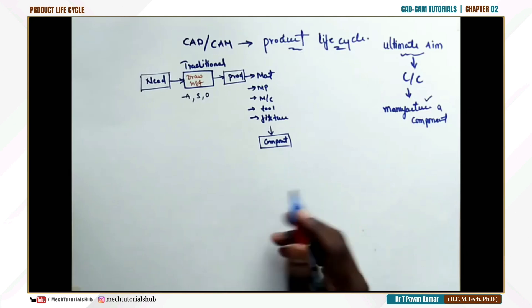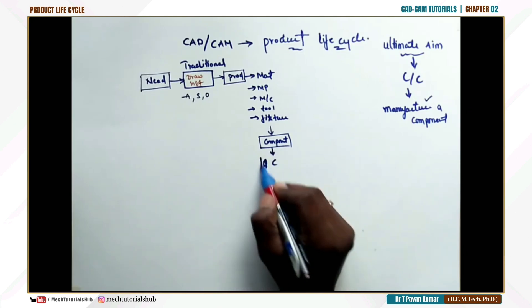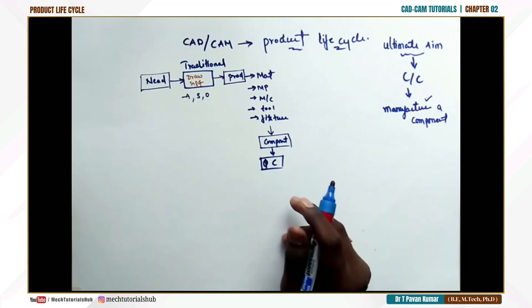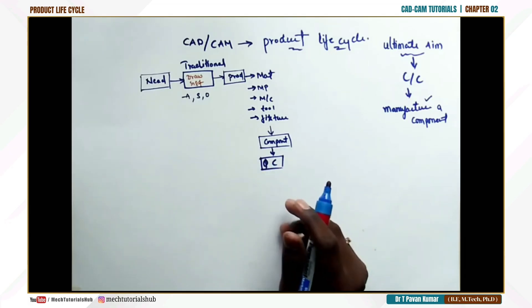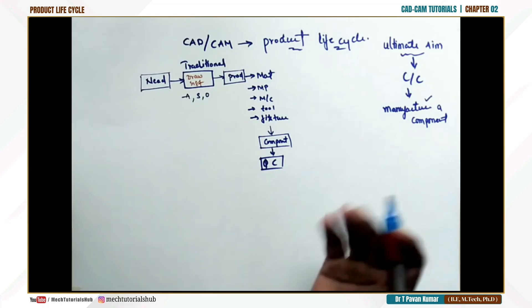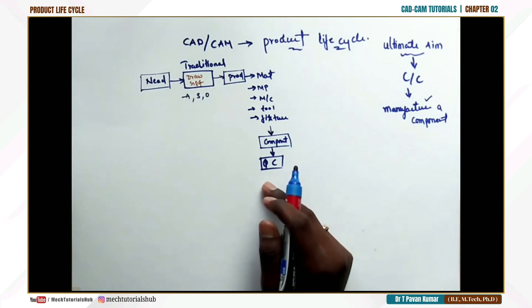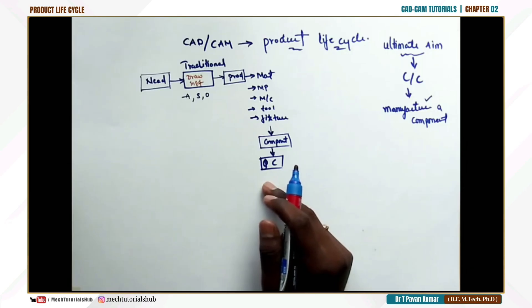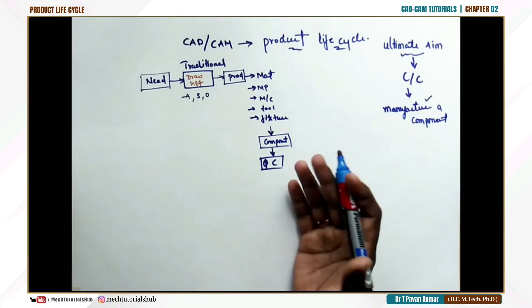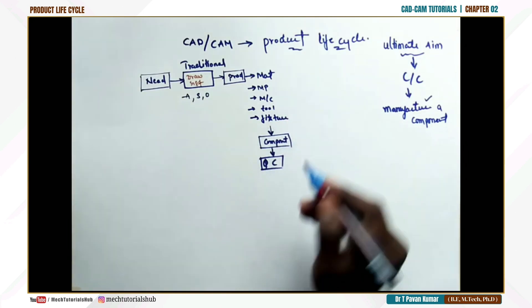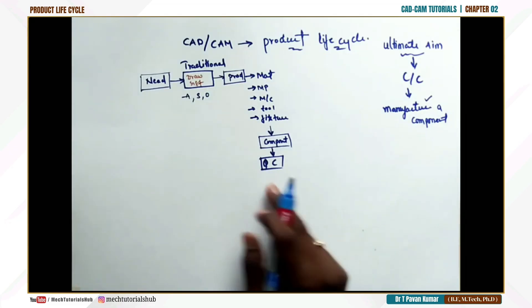After one component was prepared, quality checking was performed manually. In the process of manual checking, there could be errors that would create problems in real-time working. Another major issue: when quality checking found defects or faults, you couldn't go back because material, manpower, and time had already been consumed.